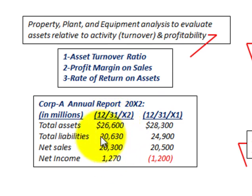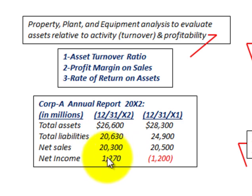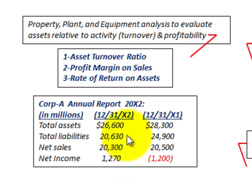We're going to have total liabilities, net sales, and net income — all shown for the end of both years, 20x2 and 20x1.